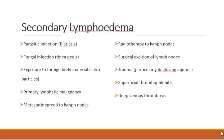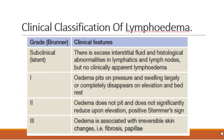Regarding the etiology of secondary lymphedema, it is caused by various causes: parasitic infection such as filariasis, fungal infection caused by tinea pedis, exposure to foreign body material like silica particles, primary lymphatic malignancy, metastasis to the lymph nodes, radiotherapy to the lymph nodes, surgical excision of lymph nodes, trauma, superficial thrombophlebitis, and deep vein thrombosis.